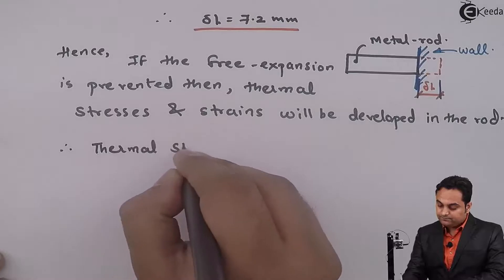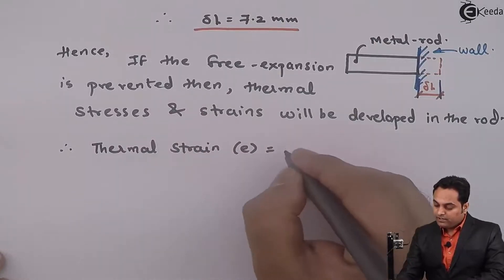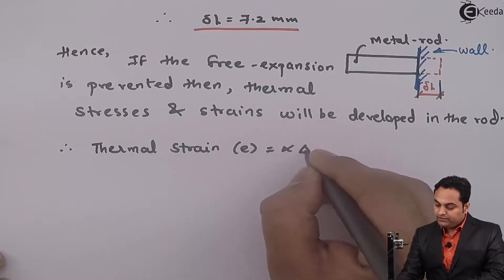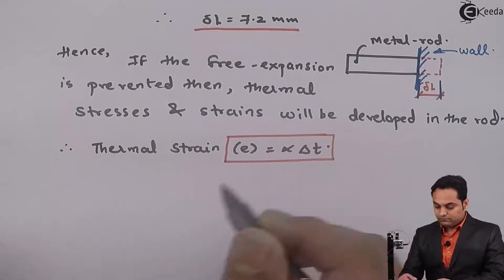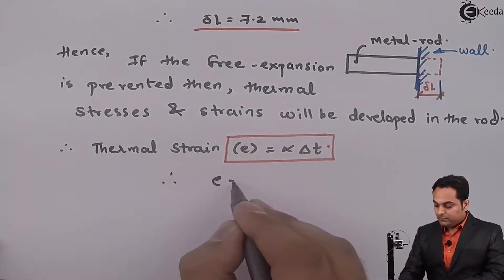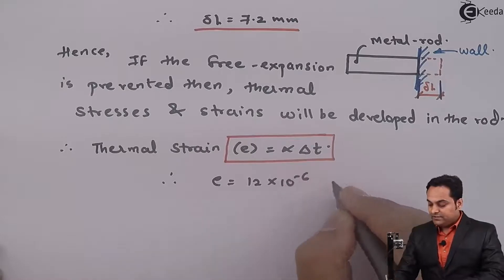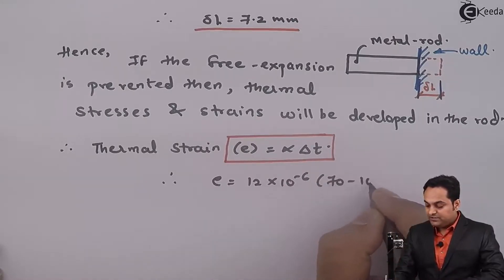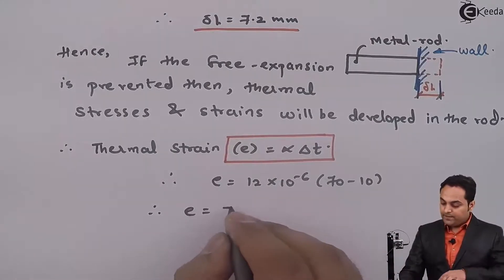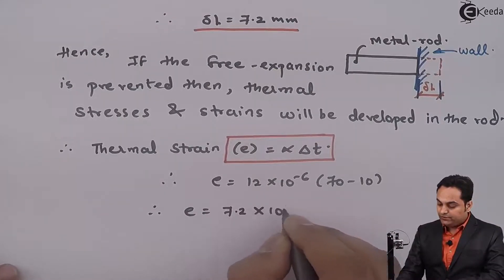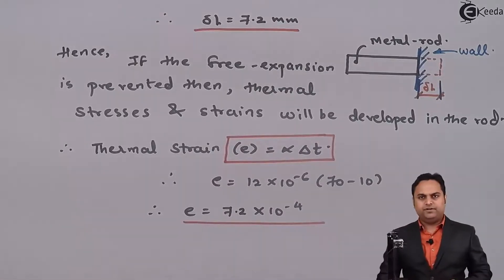Therefore, that is equal to α is 12 × 10⁻⁶ and the temperature change is 70 minus 10. So, strain, the answer which I have, it is 7.2 × 10⁻⁴. So, this much is the thermal strain.